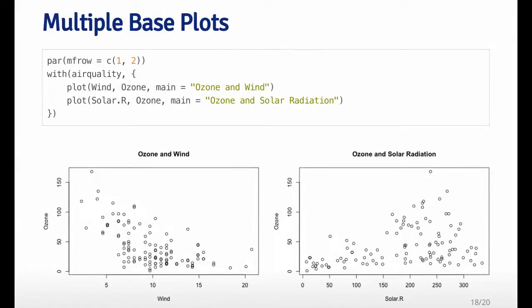So all the previous plots have been single plots that would appear on the graphics device, but sometimes you want to have multiple plots on a single device. So here I made two plots. One plots ozone versus wind, and the other one plots ozone versus solar radiation using the same data set.